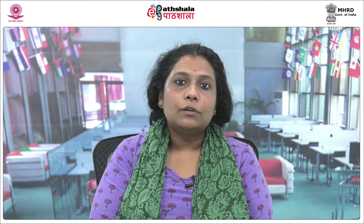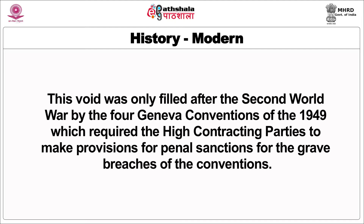This was followed by the Hague Conventions of 1899 and 1907, which regulate the means of warfare. While the Hague Conventions recognized that the right of belligerence to adopt means of injuring the enemy is not unlimited, they do not provide individual criminal responsibility for the violation of those provisions. This void was only filled after the Second World War by the adoption of the four Geneva Conventions of 1949, which required the High Contracting Parties to make provisions for penal sanctions for the grave breaches of the Geneva Conventions. The International Military Tribunals at Nuremberg and Tokyo were the first to provide penal sanctions for the violations of the laws and customs of war.